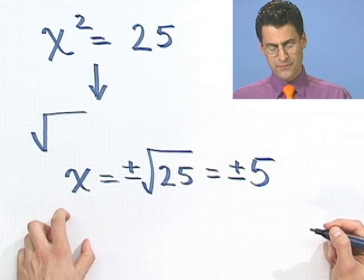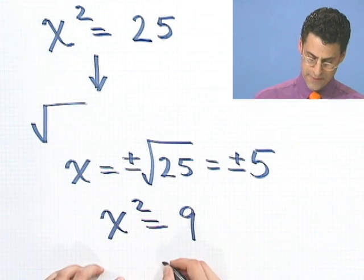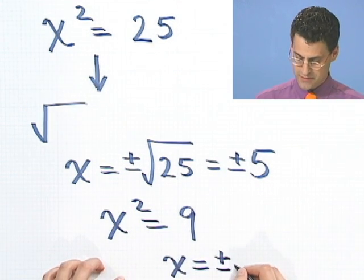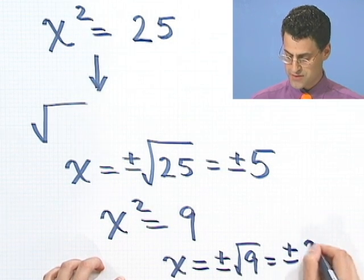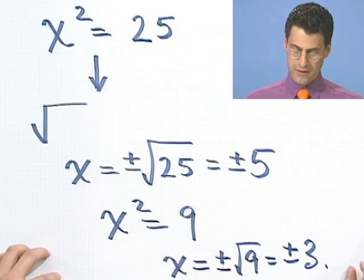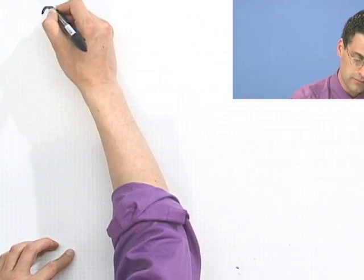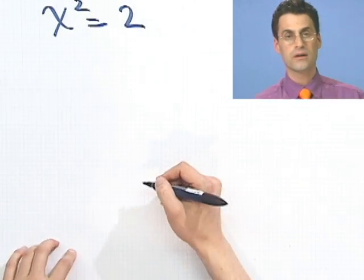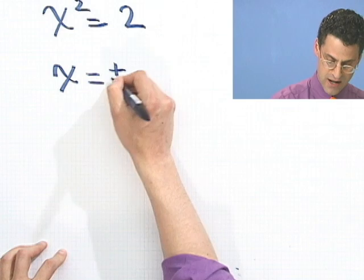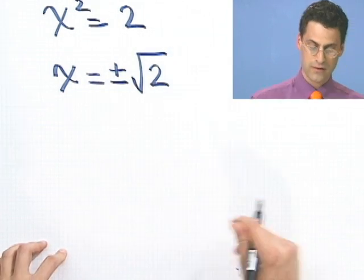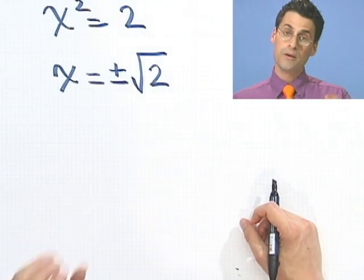That works pretty well whenever you have something squared equals a number — you just take plus or minus square roots of both sides. For example, if x squared equals 9, then x equals plus or minus the square root of 9, or plus or minus 3. Not a problem. If x squared equals 2, even that's fine because x equals plus or minus the square root of 2. The point is, if you have a perfect square equal to something, I can just take plus or minus the square roots of both sides and be done.